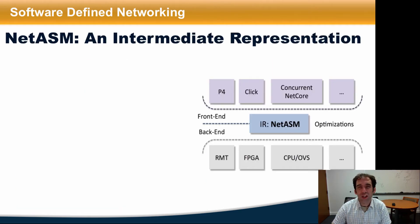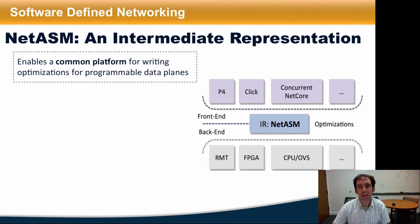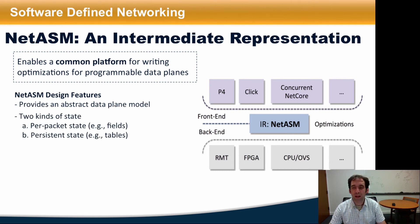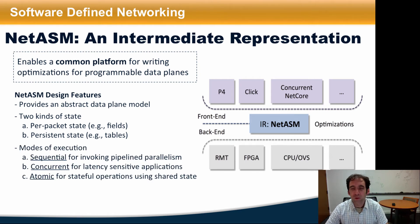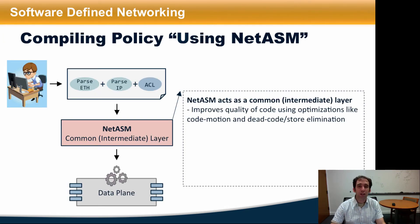NetASM is an intermediate representation that acts as a narrow waist between languages that are beginning to emerge, such as P4, ClickOS, and concurrent NetCore, and a growing diversity of targets or backends. It enables a common platform for writing optimizations to these programmable devices. It provides an abstract cost model, persistent state for storing information across packets, and several modes of execution that can be applied together to implement complex execution paths through various devices. The language has 23 primitive instructions for implementing these network policies, and it acts as a common intermediate layer between higher-level languages and lower-level data plane targets.